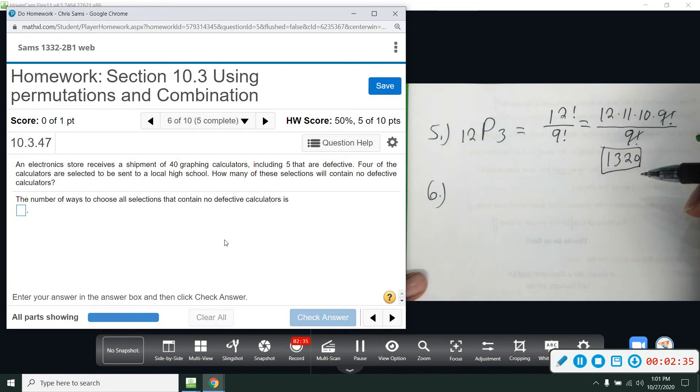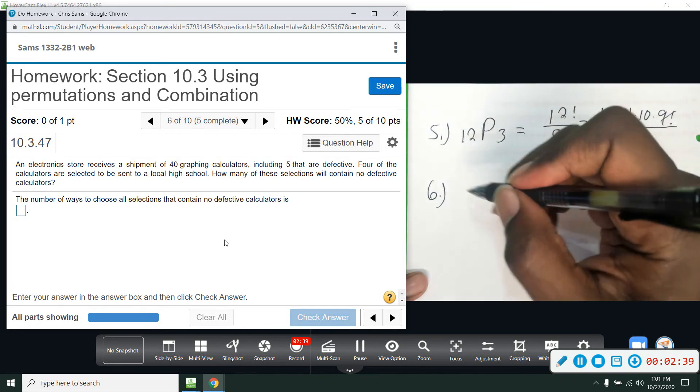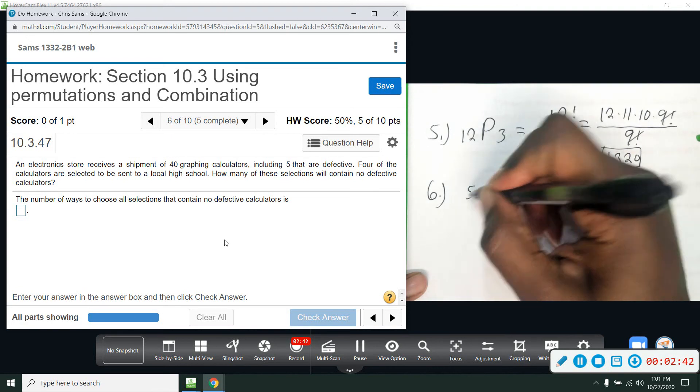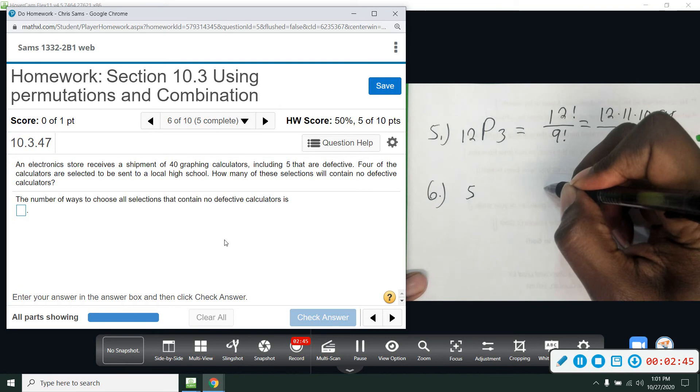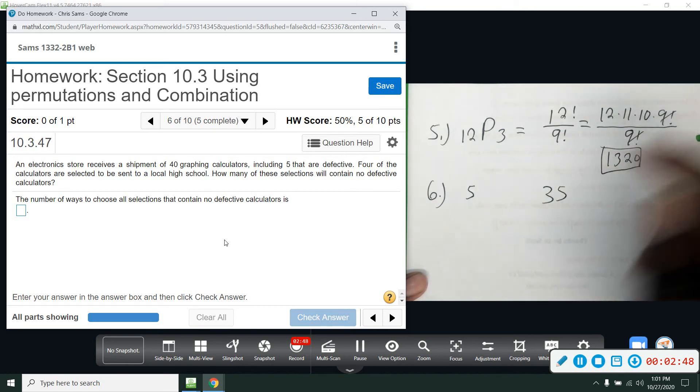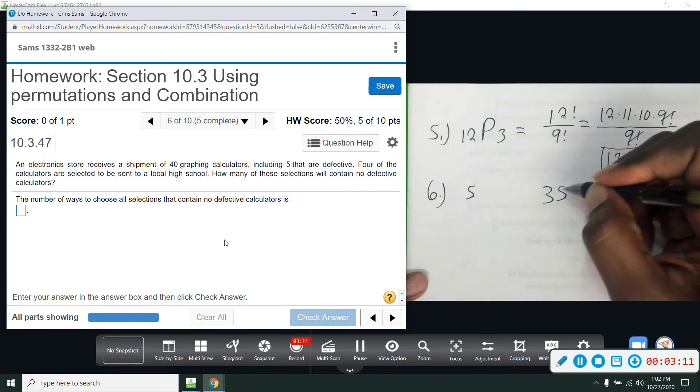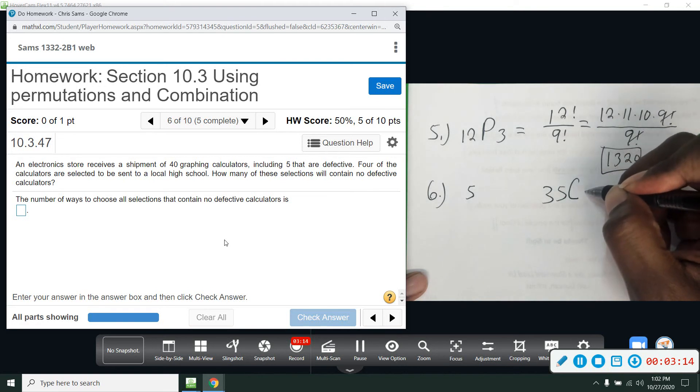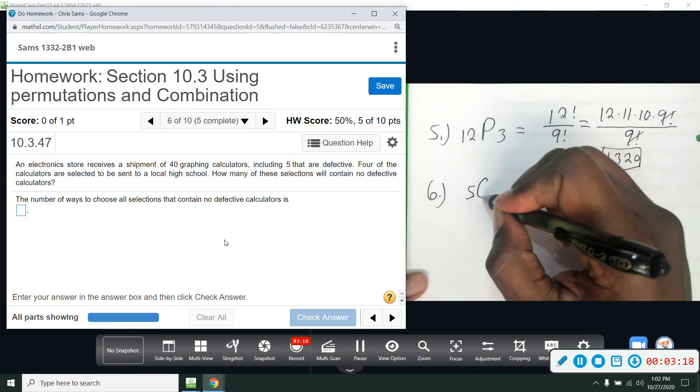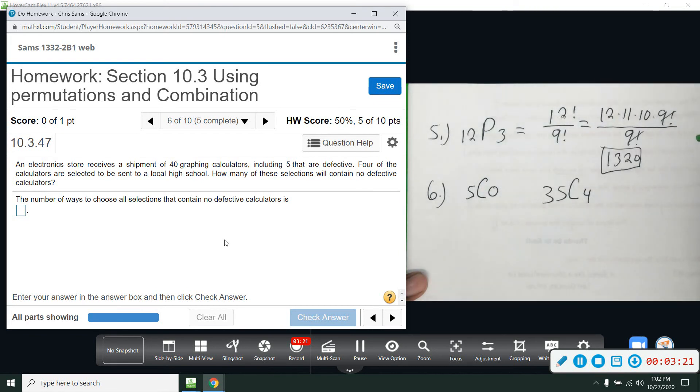So we're given at the beginning, there are 40 calculators, five are defective. So right now I'm going to start out splitting these into groups. Five that are defective out of 40, that leaves 35 that are not. So we've got 40 calculators all together, five are defective, so that means 35 are not. And then they say four of the calculators are selected to be sent to a high school. And we want to know how many of these selections of four will contain no defective. So out of the 35, that means we have to choose all four from this group, and that means out of these five that are defective, we have to pick none of them.